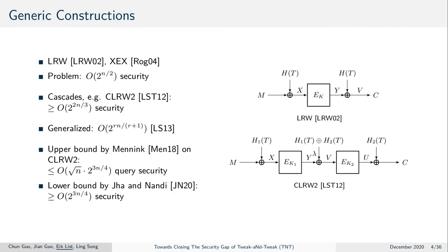To surpass this bound, other works proposed to use cascade designs. In 2012, Landecker et al. proposed the cascade of two LRW constructions, where they used two independent hash functions to have three independent hash functions in total. They showed their construction had at least 2^(n/3) security. In the subsequent year, Lampe and Seurin generalized this to an R-round construction and showed it asymptotically achieves almost optimal security.